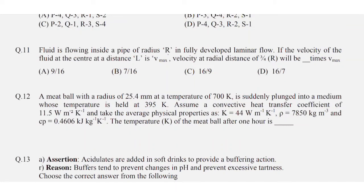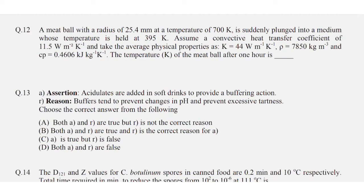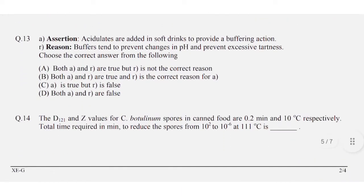Question number thirteen is an assertion and reason type question. The assertion is: acidulants are added in soft drinks to provide a buffering action. The reason is: buffers tend to prevent changes in pH and prevent excessive tartness. Option B is correct: both A and R are true.